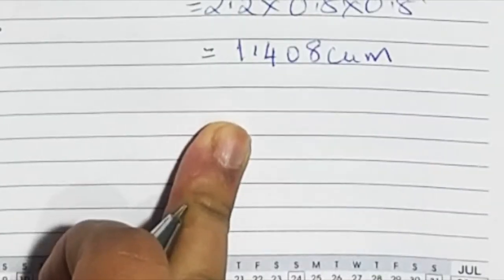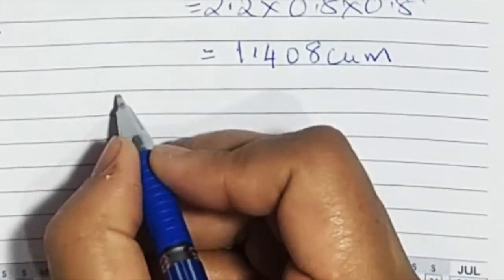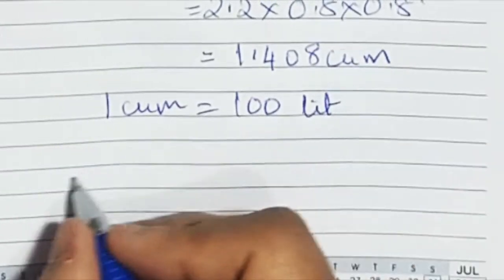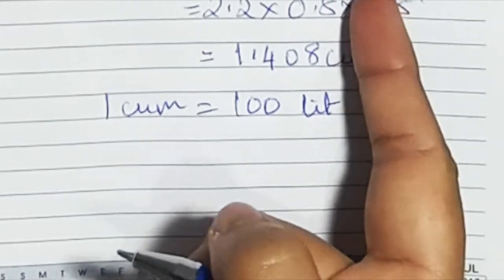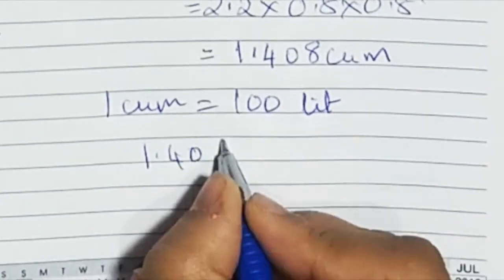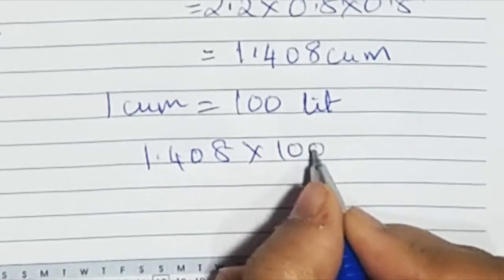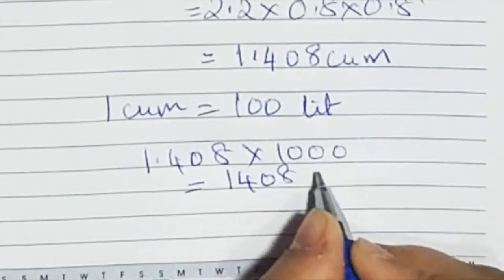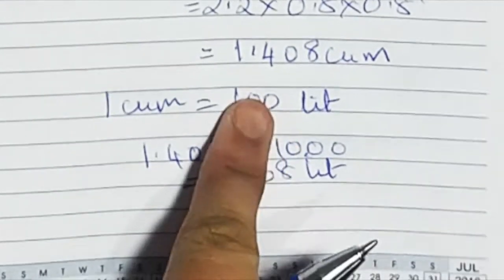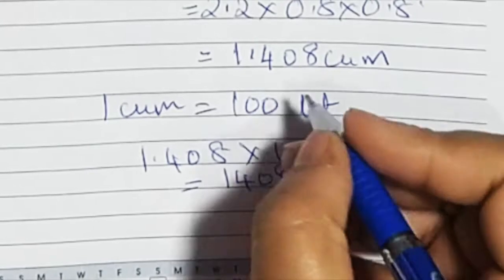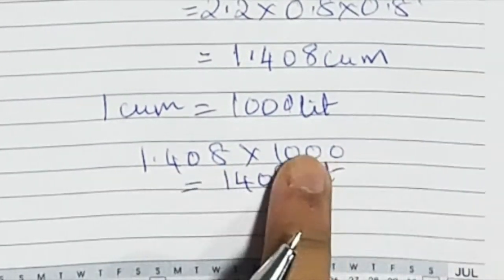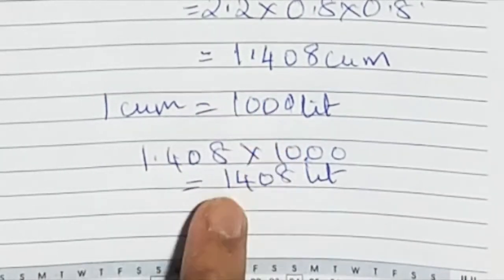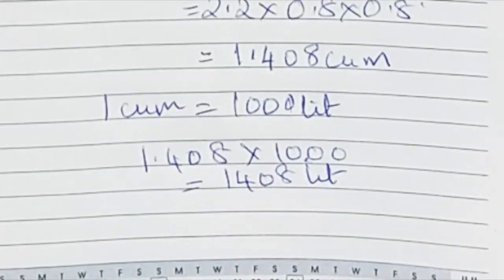Remember, 1 cubic meter is equal to 1,000 liters. So multiply 1.408 by 1,000. The decimal point moves 3 places forward, giving us 1,408 liters. The final answer is 1,408 liters.